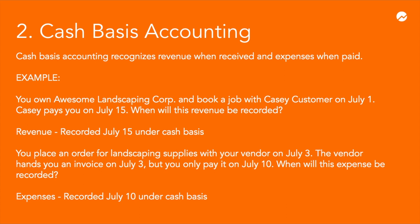Let's use the same landscaping example to see how cash basis accounting works. Let's say you own Awesome Landscaping Corporation and you book a job with Casey Customer on July 1st. Casey pays you with a check on July 15th and you deposit the check that same day. Under cash basis accounting, the revenue will be recorded on July 15th because that is when you actually received and deposited the check from Casey.